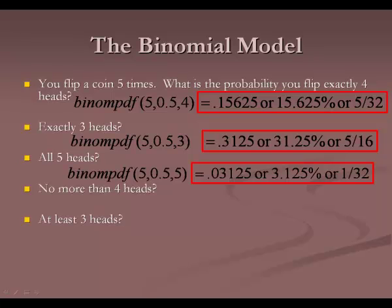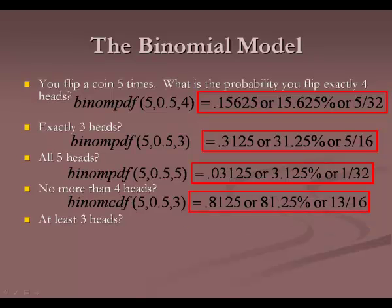No more than four heads introduces binomCDF instead of PDF. We're accumulating all the way up to no more than four heads. The correct entry is binomCDF(5, 0.5, 4) — the last number should be 4, not 3. This accumulates up to four heads and gives 0.96875, or 96.875%, which is 31/32 as a fraction.